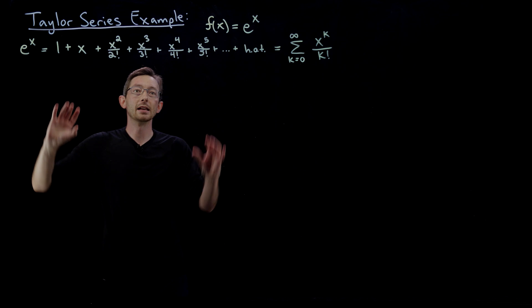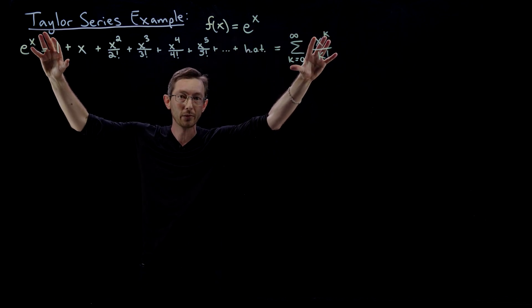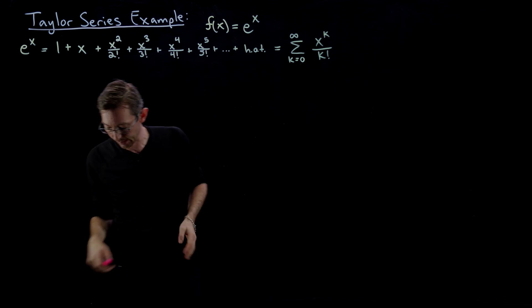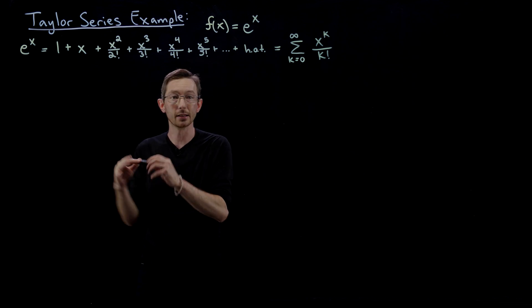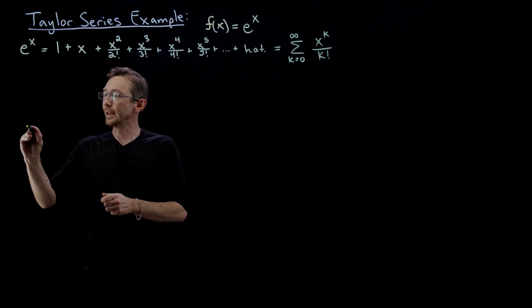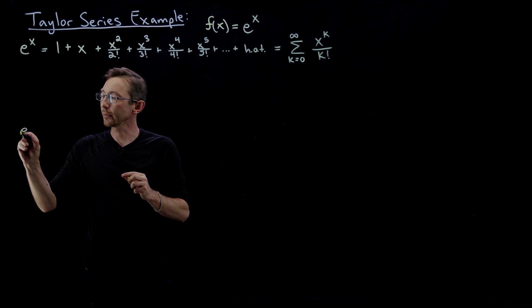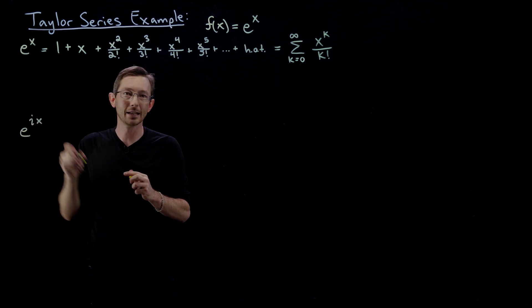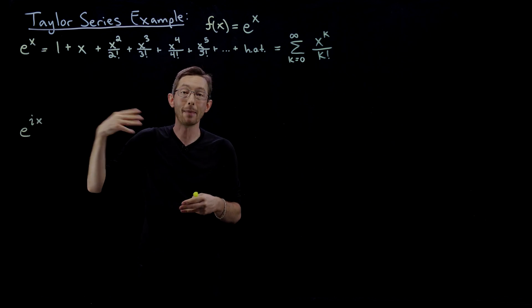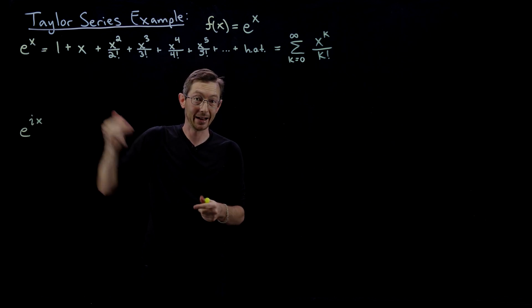What I want to show you is how you can use this expression to derive Euler's formula, which is really neat. So now if we take e^(ix), let's say we plug in a complex number. X is real. Let's say we plug in an imaginary number, e^(ix).